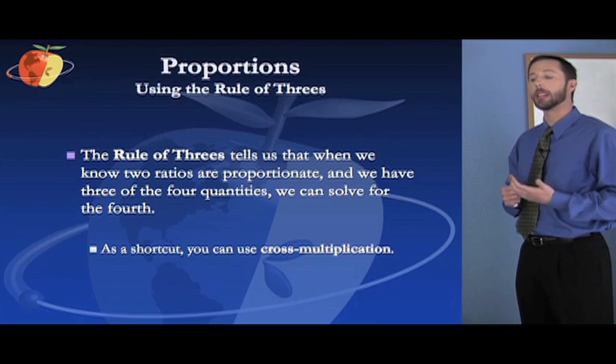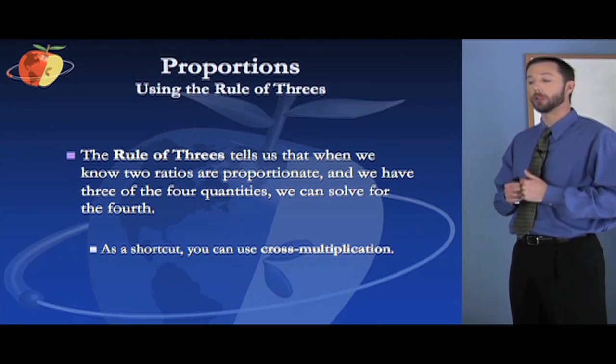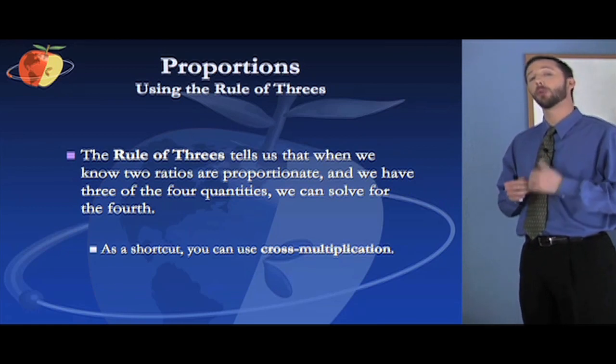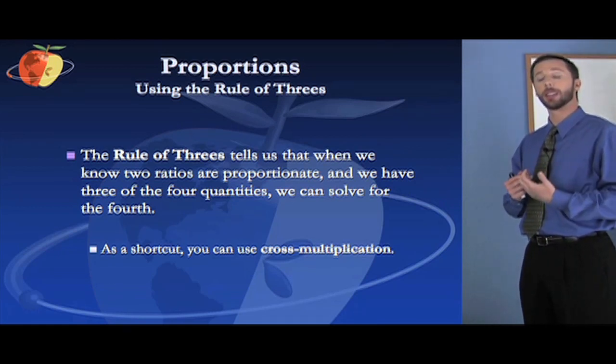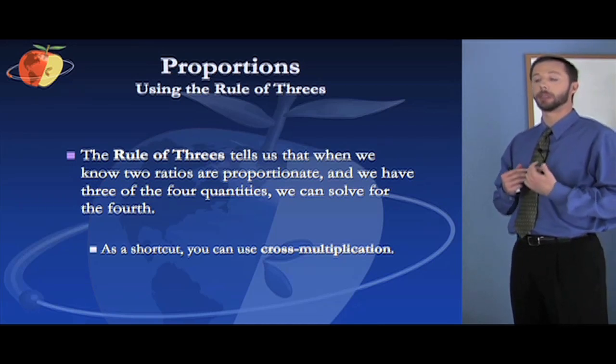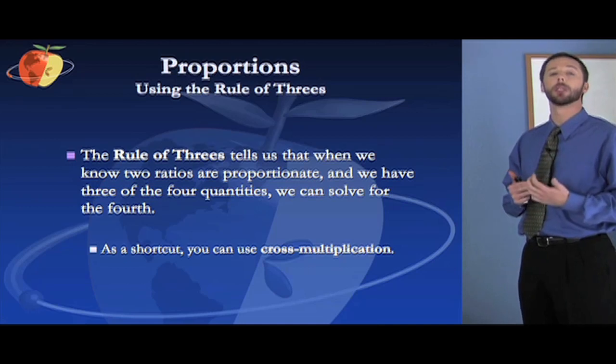The rule of threes tells us that when we know two ratios are proportionate and we have three of the four quantities, we can solve for the fourth. And the shortcut to do that is what we call cross multiplication. So let's look at an example of this in practice and how you could use this on the exam.